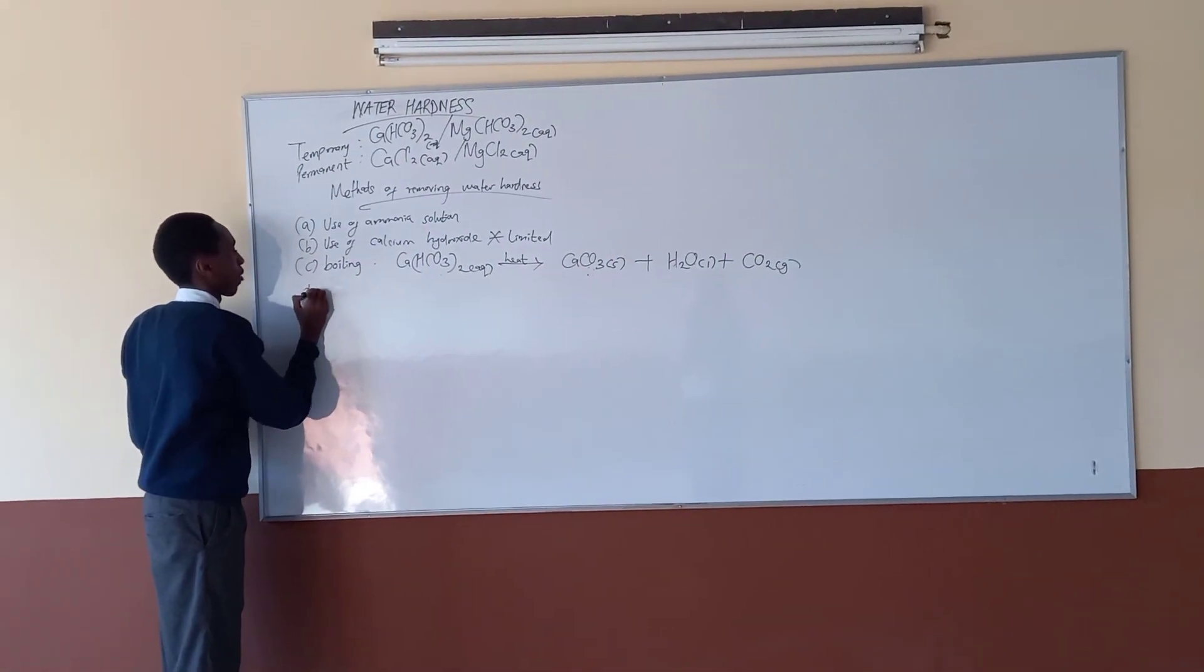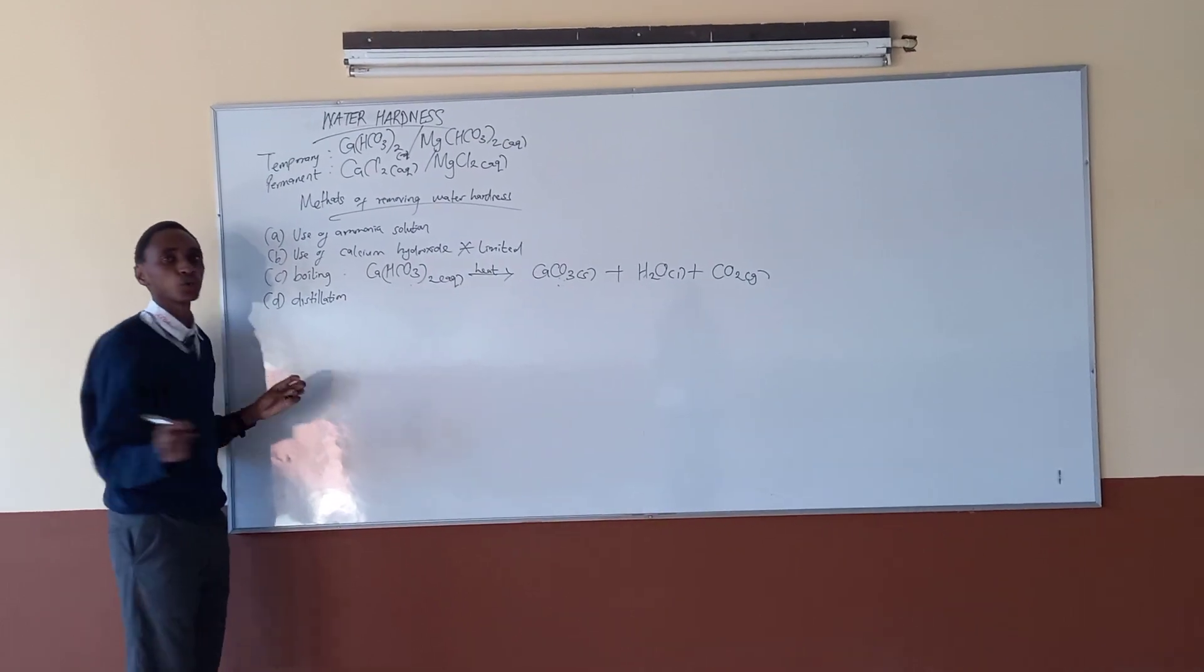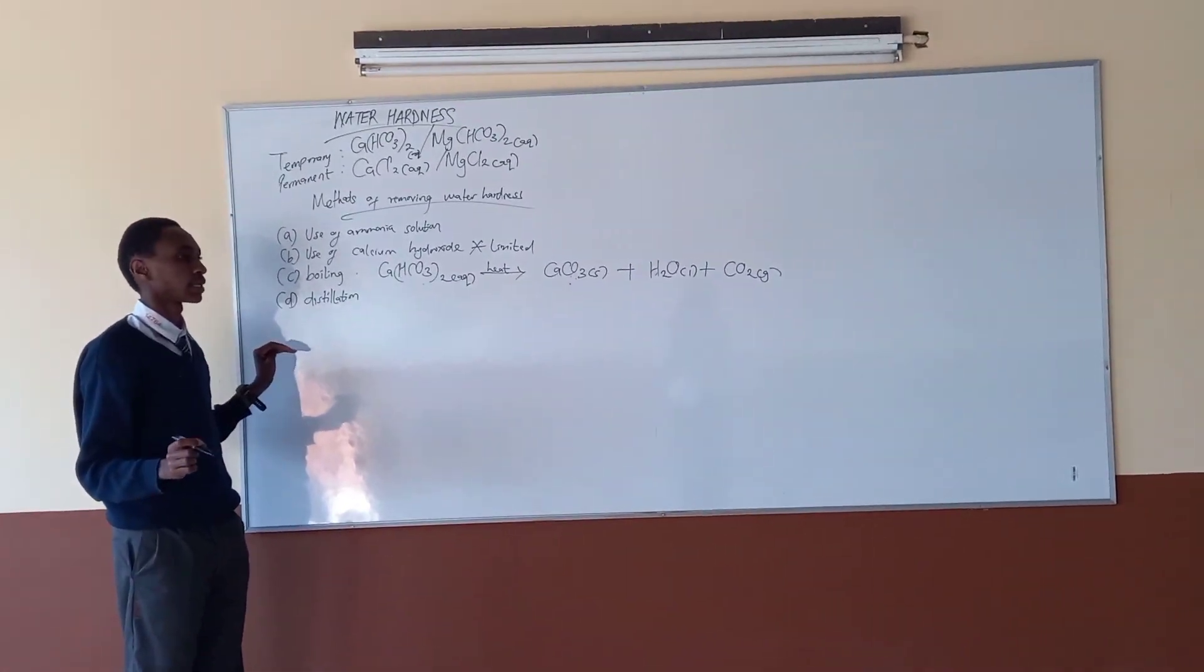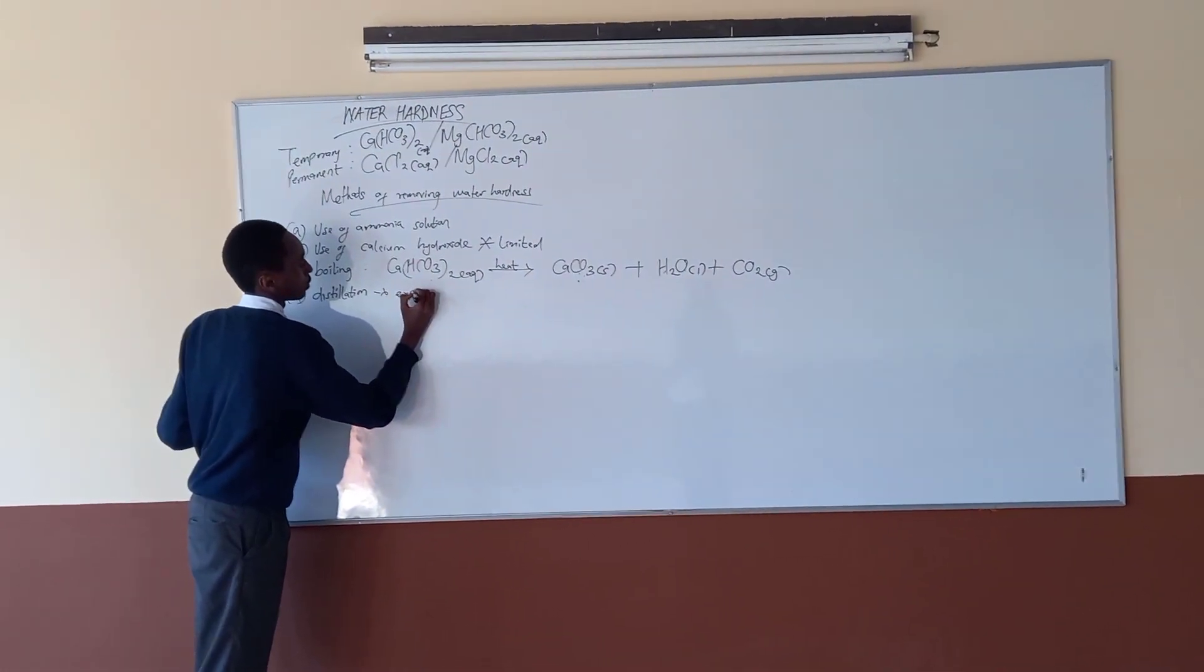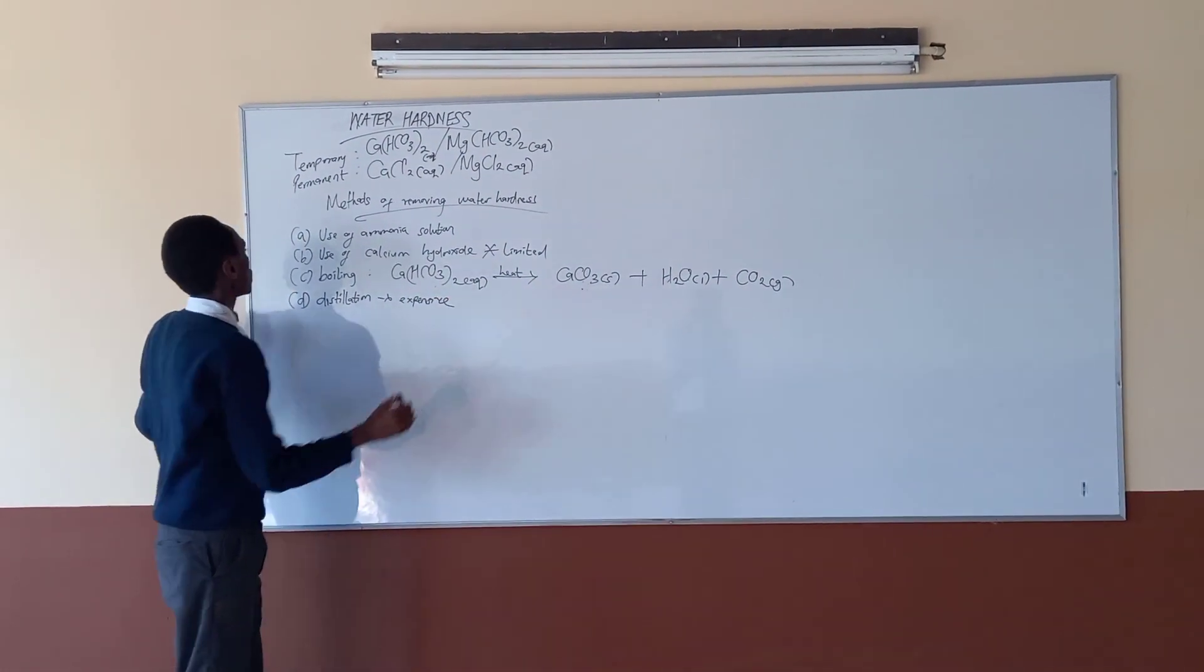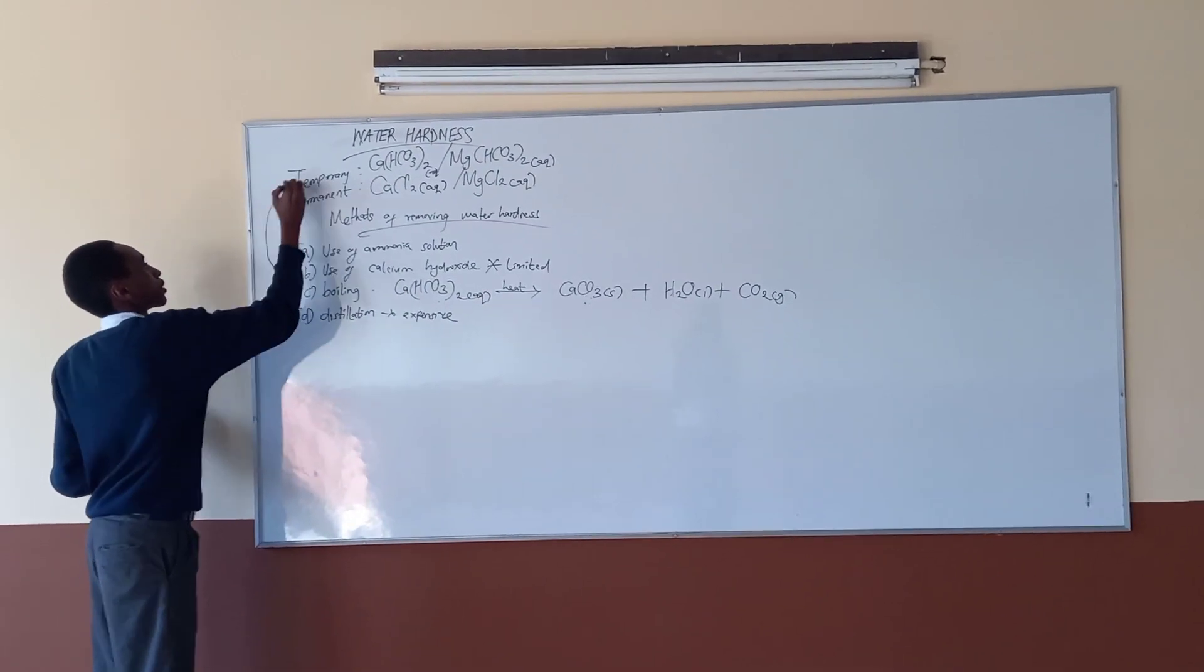Part D, we can use distillation. Many times we boil water and we say that it's distilled. But the disadvantage of distillation is it's never used in large scale. So, as for the first four, these are applicable to temporary water hardness.